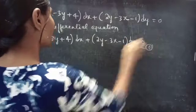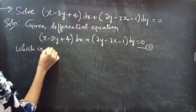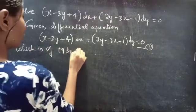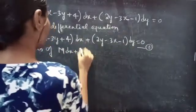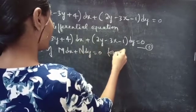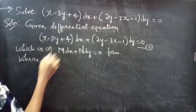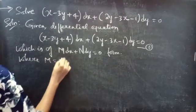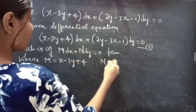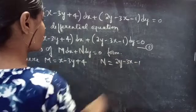Consider it as equation 1, which is of the form M dx plus N dy equals 0, where by comparing these two we will get M equals to x minus 3y plus 4 and N equals to 2y minus 3x minus 1.